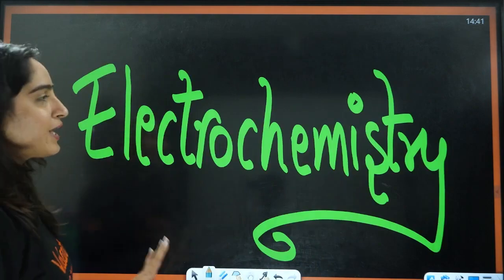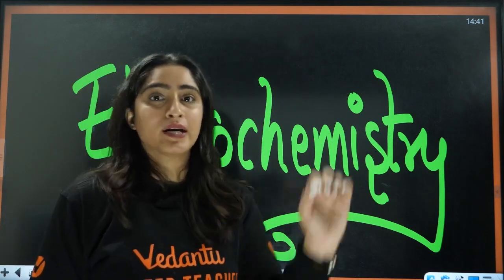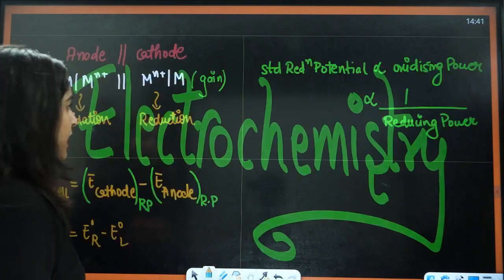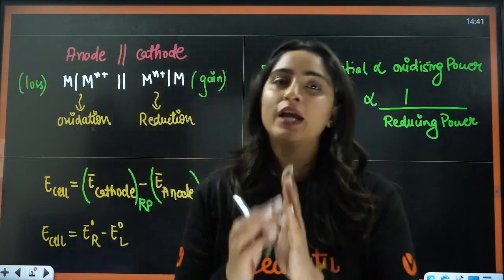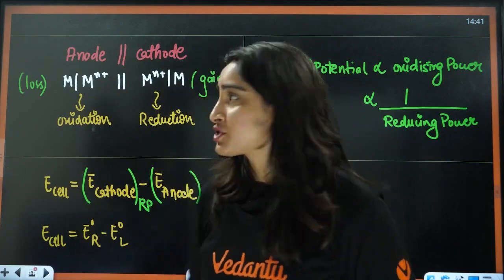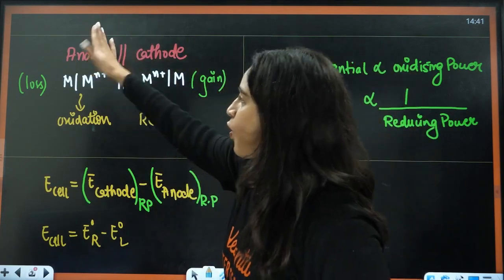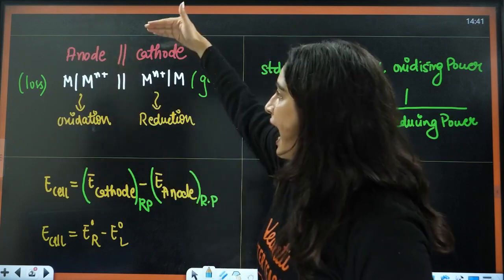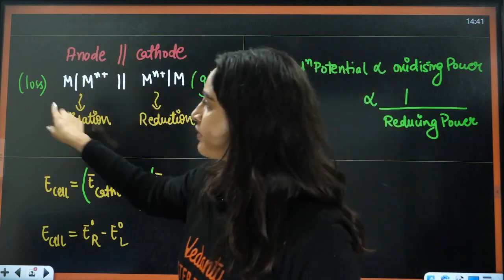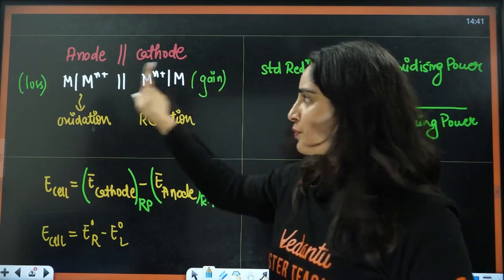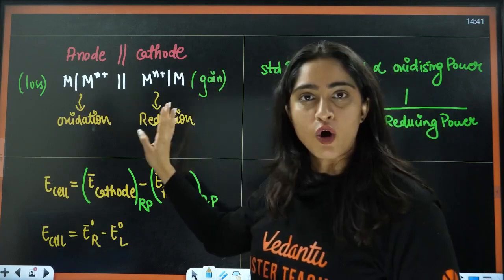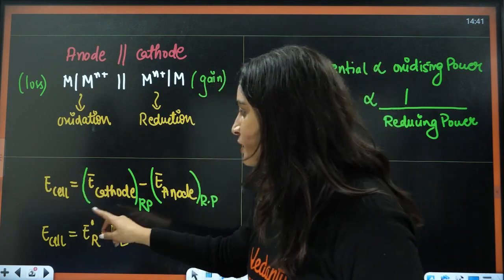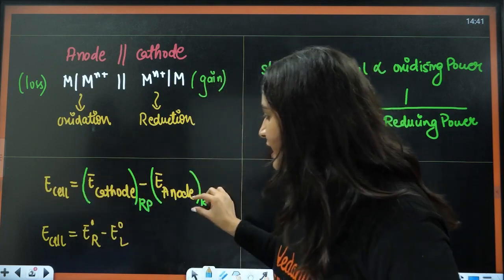Next we have electrochemistry — a very, very, very important and very scoring chapter. There are just a few formulas but they are very important, especially the Nernst equation. This is the anode, this is the cathode — this is a representation of the cell. At anode there will be oxidation; at cathode there will be reduction. That means here we have loss of electron, here we have gain of electron. This is the salt bridge. Next, how to calculate E cell — that equals E cathode minus E anode.